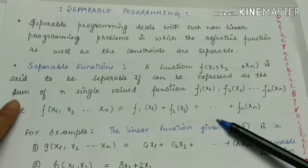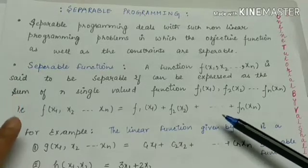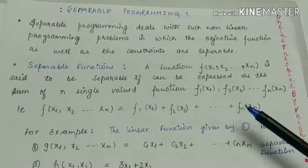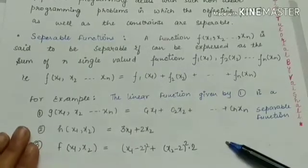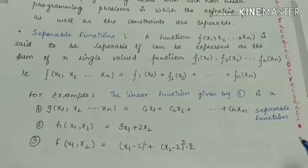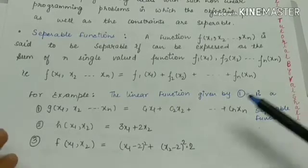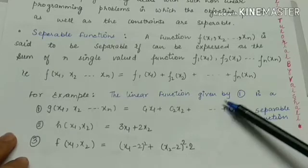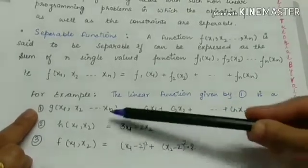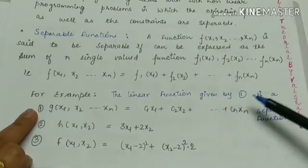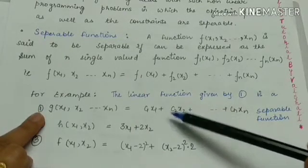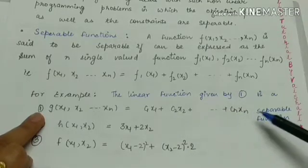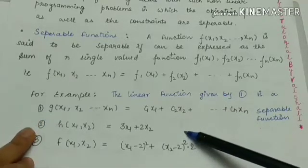Let's look at examples to clarify the concept. A linear function g depending on x1, x2, ..., xn can be written as c1·x1 + c2·x2 + ... + cn·xn, which is a sum of n linear functions. Since this big function is written as a sum of those linear functions, it is a separable function.